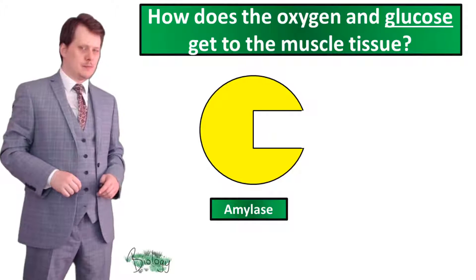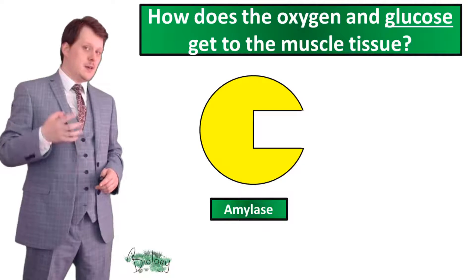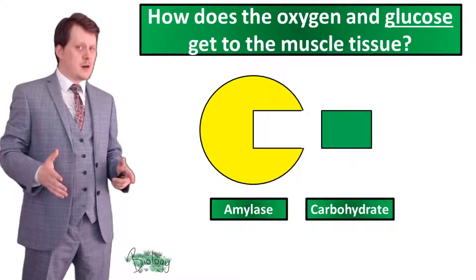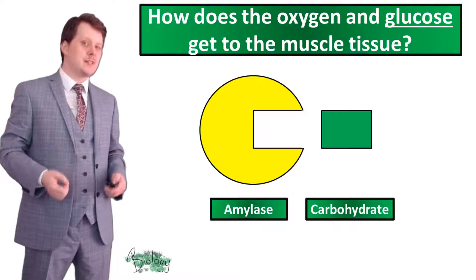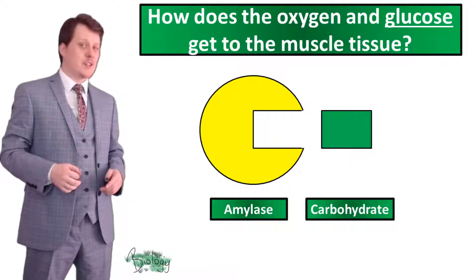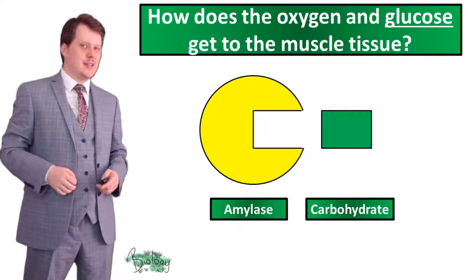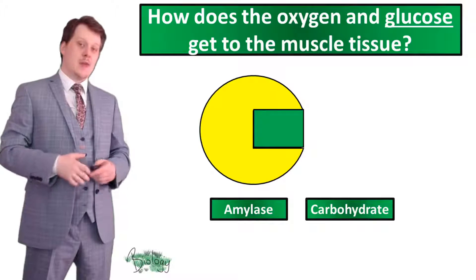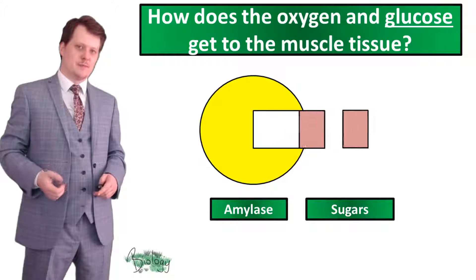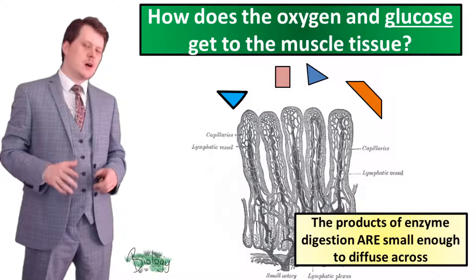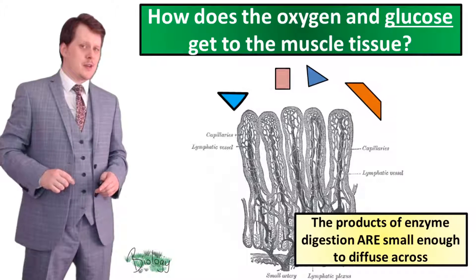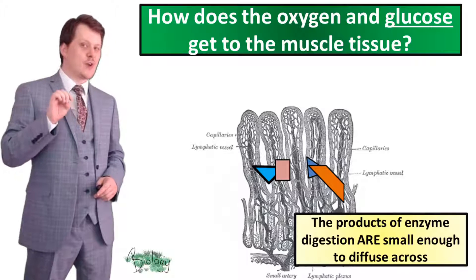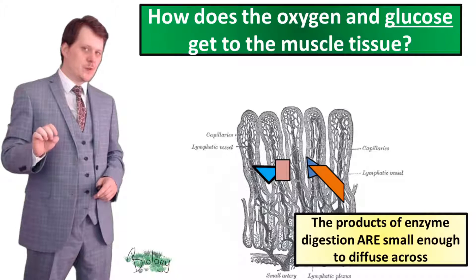But where does glucose come from? Glucose has to be consumed in the diet, either as the sugar glucose or as carbohydrate. The body can't use complex carbohydrates directly for aerobic respiration — they have to be broken down into glucose. This is done when the carbohydrates are digested by our enzymes, which have a complementary active site to the shape of these carbohydrates and break them down into smaller soluble sugars including glucose. These can then diffuse across the wall of the small intestine into the capillaries, and are transported in the blood plasma to the tissues for aerobic respiration.